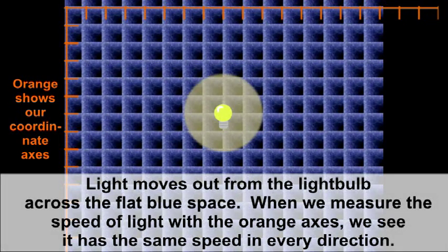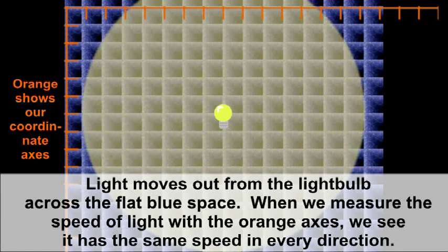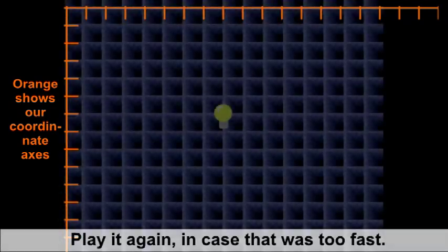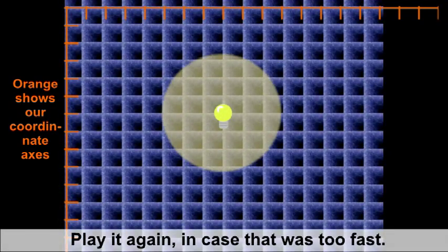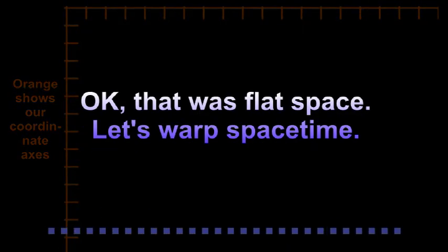Light moves out from the light bulb across the flat blue space. When we measure the speed of light with the orange axis, we see that it has the same speed in every direction, one square per animation frame. I'll just play that again in case it was too fast. Okay, that's flat space.